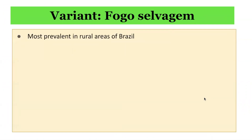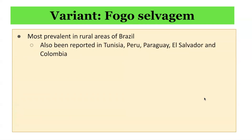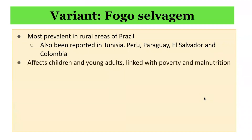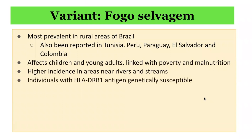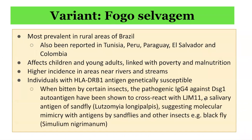The endemic variant is called Fogo Selvagem. It is most prevalent in rural areas of Brazil, and has also been reported in Tunisia, Peru, Paraguay, El Salvador, and Colombia. It affects children and young adults and is linked with poverty and malnutrition, with a high incidence in areas near rivers and streams. Individuals with genetic susceptibility HLA-DRB1 can develop this form when bitten by insects. The pathogenic IgG4 against DSG1 autoantigen has been shown to cross-react with a salivary antigen of the sandfly, suggesting molecular mimicry with antigens from sandflies, blackflies, and other insects.